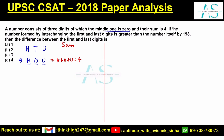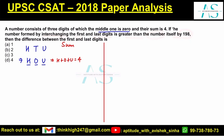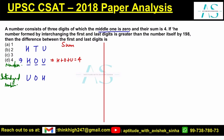The question says: if the number found by interchanging the first and the last digit is greater than the number itself by 198, what is the difference between H and U — the first and last digits? Our original number is H 0 U, and if we interchange the digits, the interchanged number becomes U 0 H.